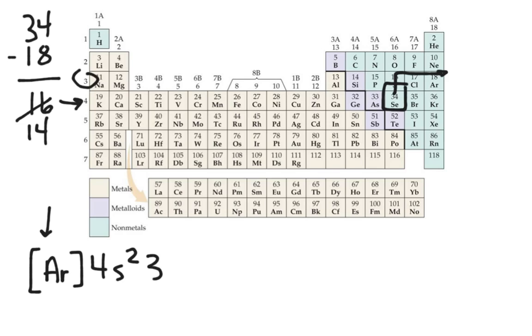After the 4s comes the 3d. The 3d, like any d, can house 10 electrons. Take that off of our total and we're left with 4. Finally we go to the 4p. And we have 4 left to go into what can hold 6.